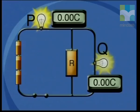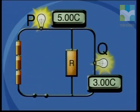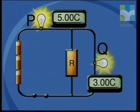When we count the number of charges moving through the light bulb in one second, we find that there are more charges per second passing through light bulb P than through light bulb Q. Therefore, the total amount of charge that moves past light bulb P in one second is greater, meaning the current in bulb P is greater. The size of the current is measured by the total amount of charge that will pass any point in an electric conductor in one second.